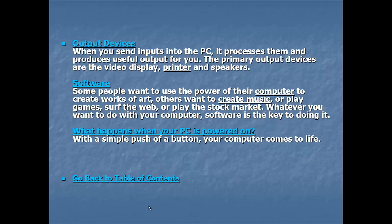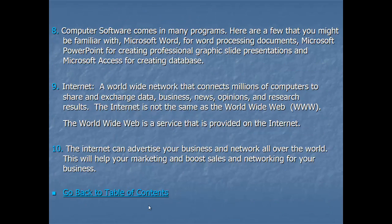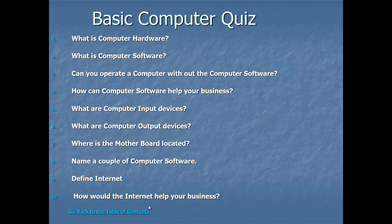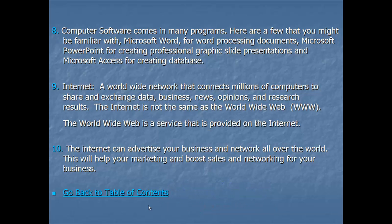When a PC is powered on with a simple push of a button, your computer comes to life and starts executing programs stored in its memory or storage device. The internet is a network of interconnected computers — it could be within a building, a city, a country, or a continent. Millions of computers throughout the world are connected through the internet.